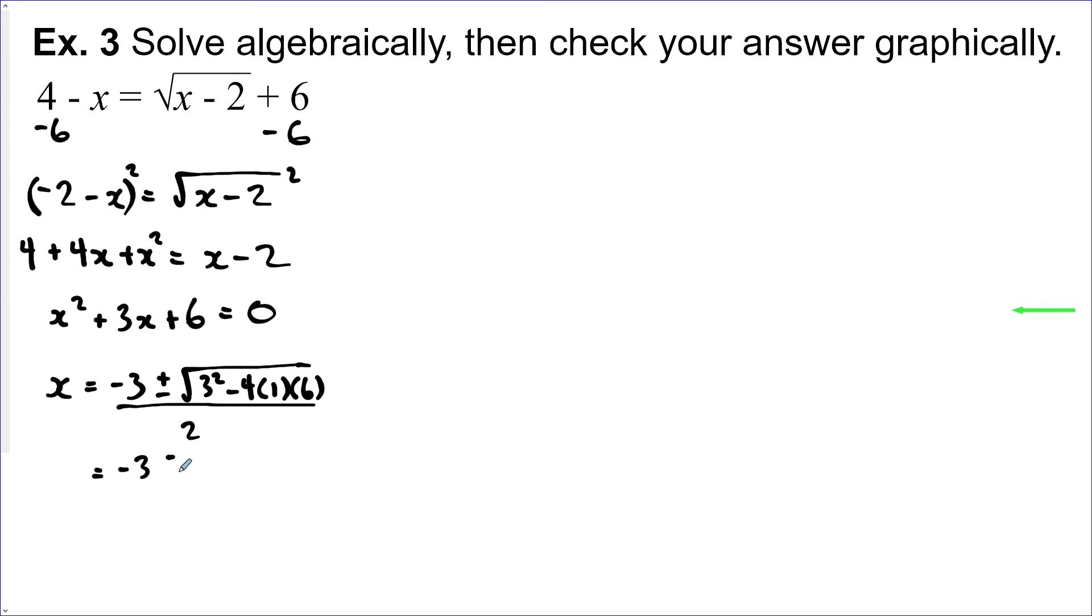Okay, and that's negative 3 plus or minus 9 minus, and we've got a problem here. 9 minus 24 is going to be a negative number underneath a radical sign. So negative 3 plus or minus the square root of negative 15 all over 2 means our discriminant is negative, which means that there are no real solutions.